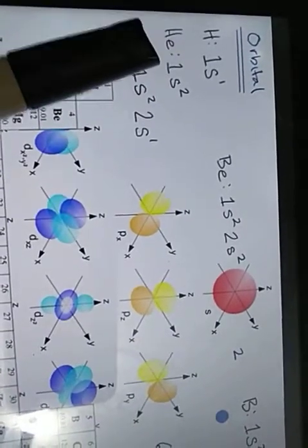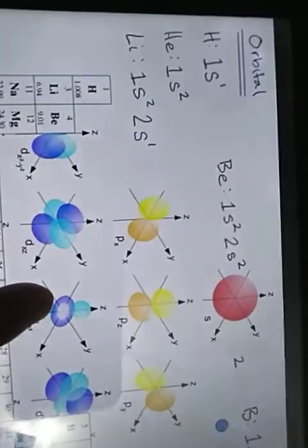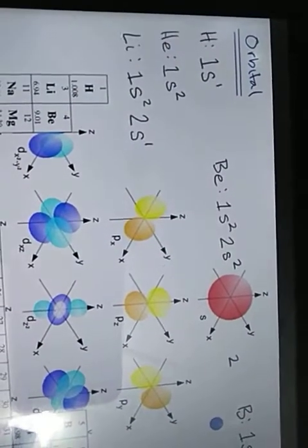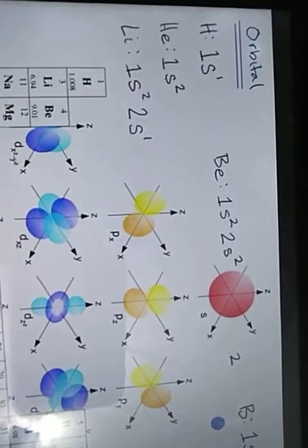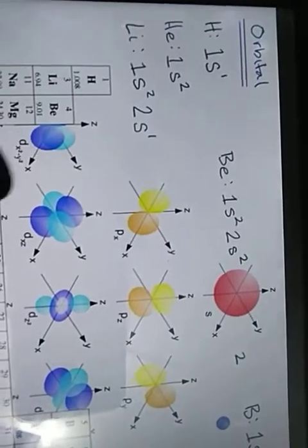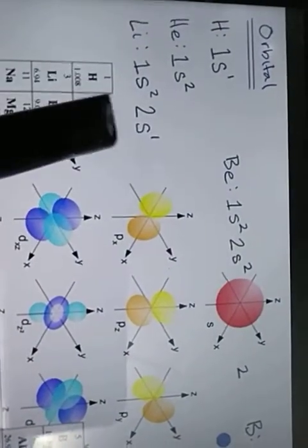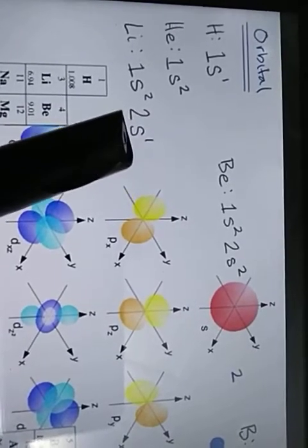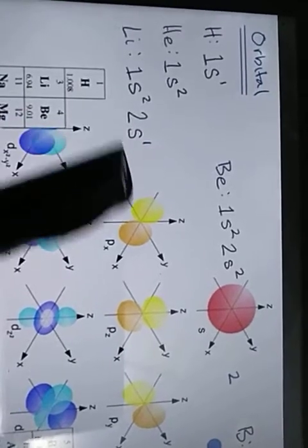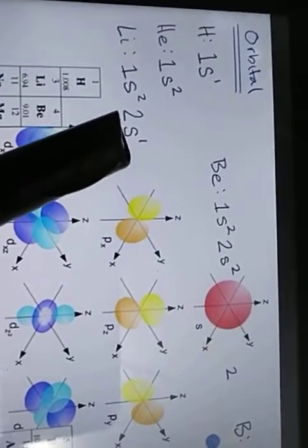Helium has 2 protons and 2 electrons. The s sub-shell can occupy 2 electrons, so both electrons go into the first shell's s sub-shell: configuration is 1s². Lithium has atomic number 3, so it has 3 electrons. Two electrons fill the first shell's s sub-shell (1s²), and the second shell has two sub-shells — s and p. The remaining one electron goes into the second shell's s sub-shell: 2s¹.